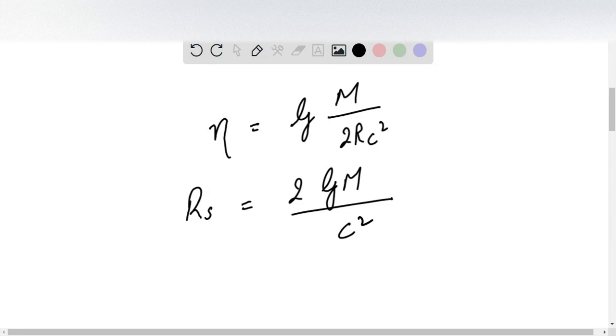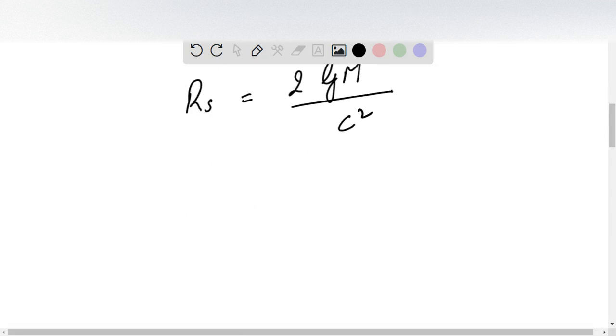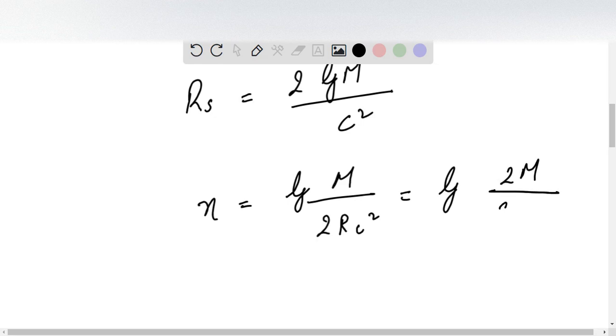The expression G·M/(2R·c²) can be rewritten. Since G·M/c² = R_S/2, we get η = G·M/(2R·c²) = (1/2)·(G·M/c²)/R = R_S/(4R).